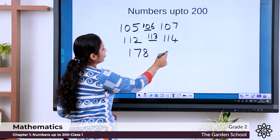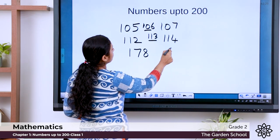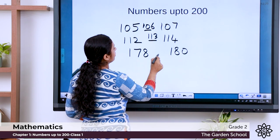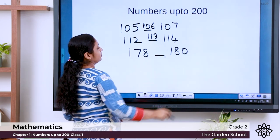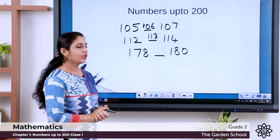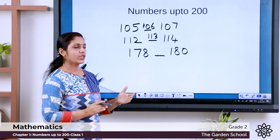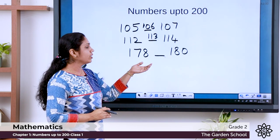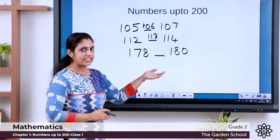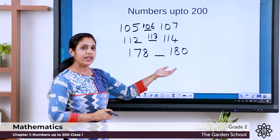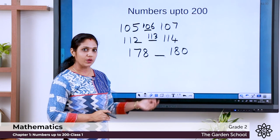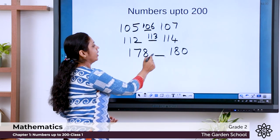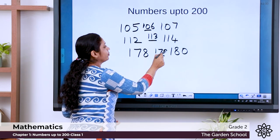Another example: 178 and 180 are given. What is the number that comes in between? Count: 178, 179, 180 — so the number in between is 179.